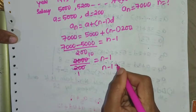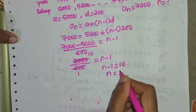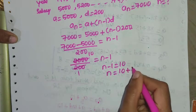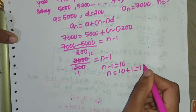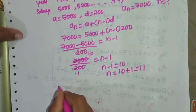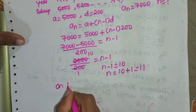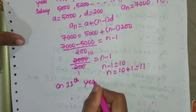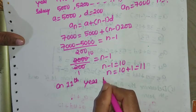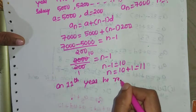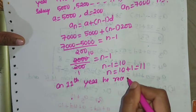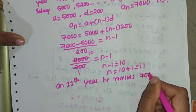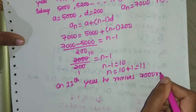So n - 1 = 10, which means N = 10 + 1 = 11. On the 11th year he receives Rs. 7000.